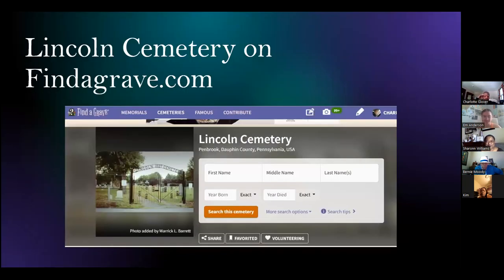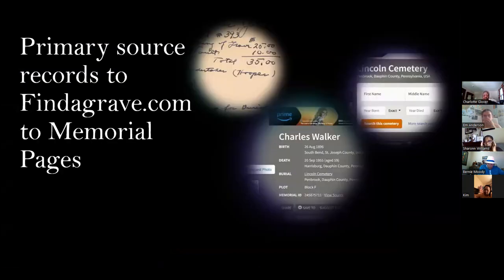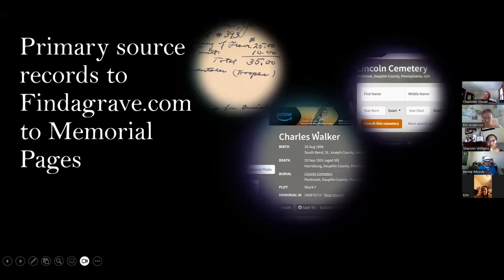This is the site where you will begin indexing for each person on your list. Make sure it is the Lincoln Cemetery in Pembroke. I bookmark it or put it in my favorites so that it's easier to access every time I'm ready to work on my indexing project. Going on to the Lincoln Cemetery Find a Grave site, typing in information from the records to create a memorial page.